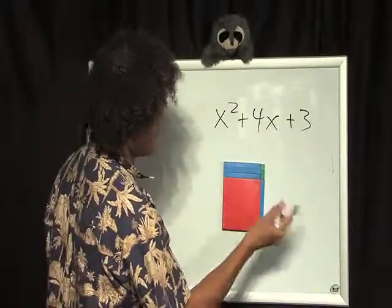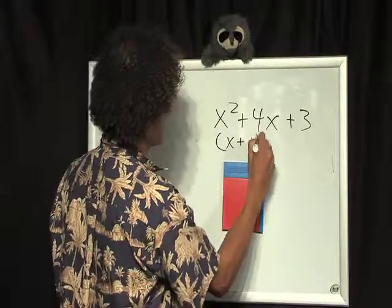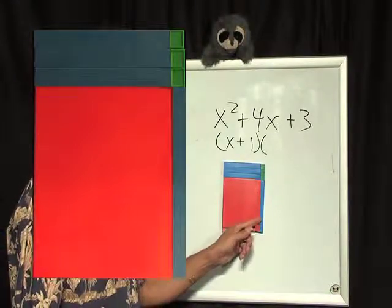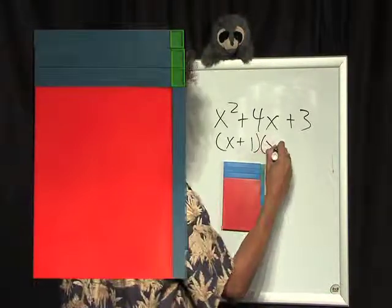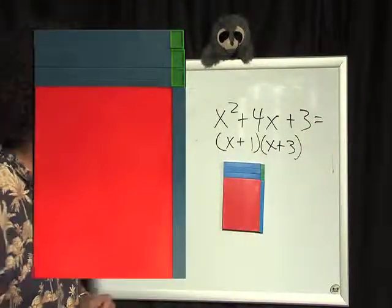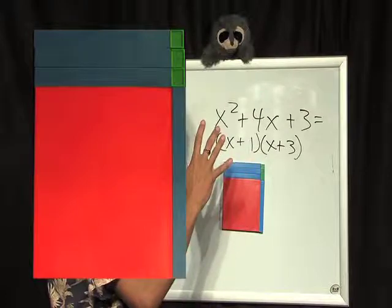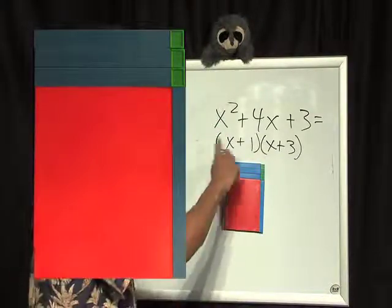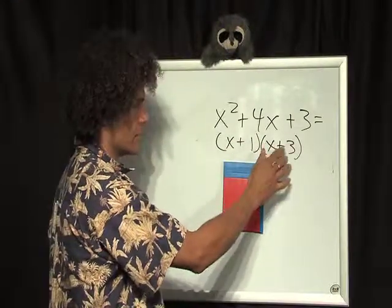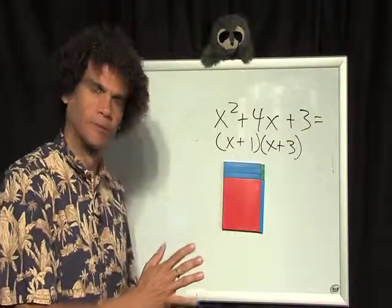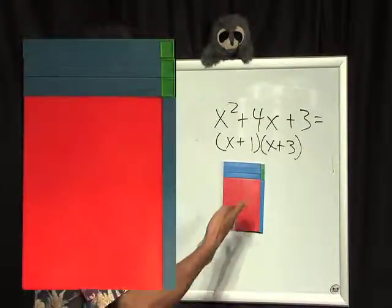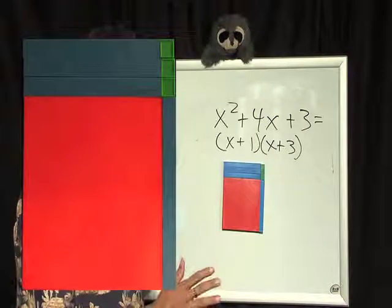Across here I have X plus 1, and up I have X plus 3. No FOIL, no distribution theory of multiplication — just introducing the basic concept of factoring. Later on we can say that X times X is X squared, and then we have 3X and another X and 1 times 3. But for right now, just understand what we're doing: we're making rectangles and counting the sides. Super easy and fun.